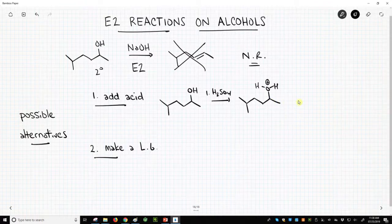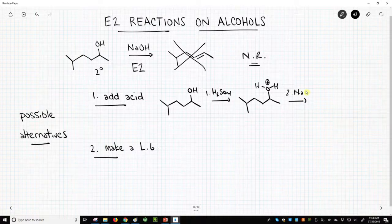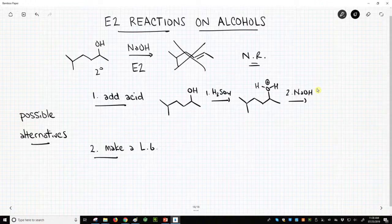Now we have a leaving group, so at this point, we'll just add some base: sodium hydroxide, could be sodium ethoxide, whatever. Why wouldn't this work?